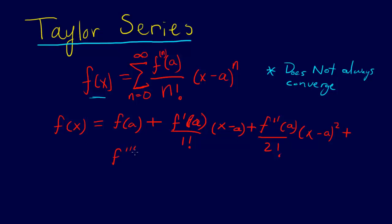F triple prime of a over 3 factorial x minus a cubed plus f to the fourth of a over 4 factorial x minus a to the fourth plus dot dot dot. And this continues going all the way up to infinity.